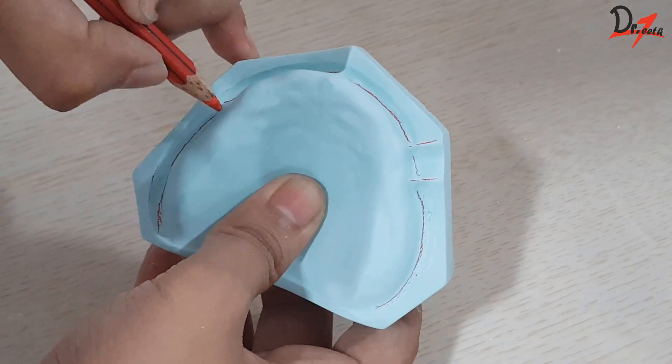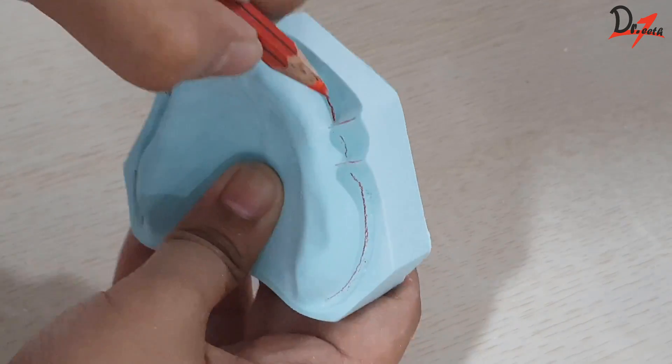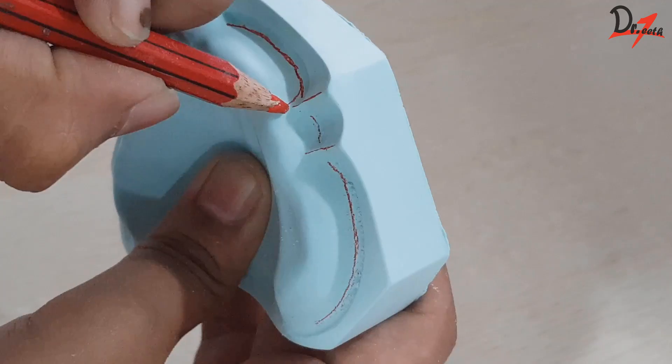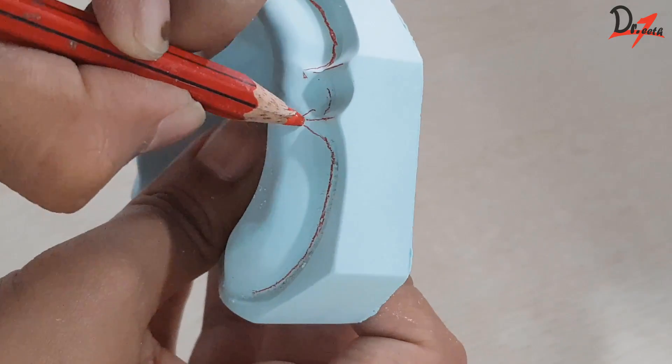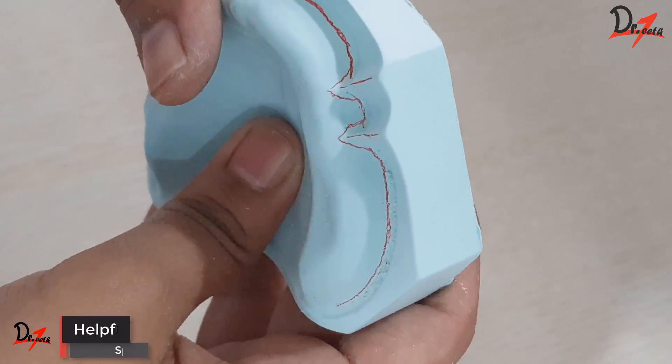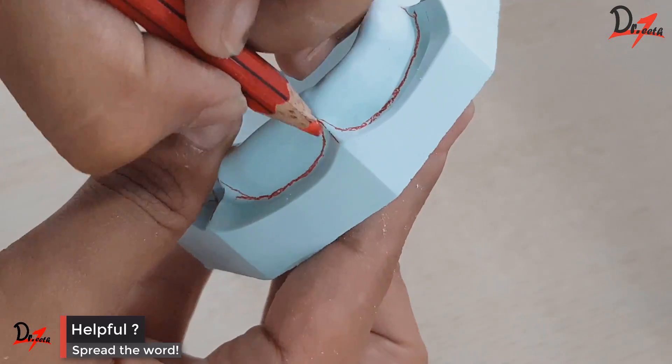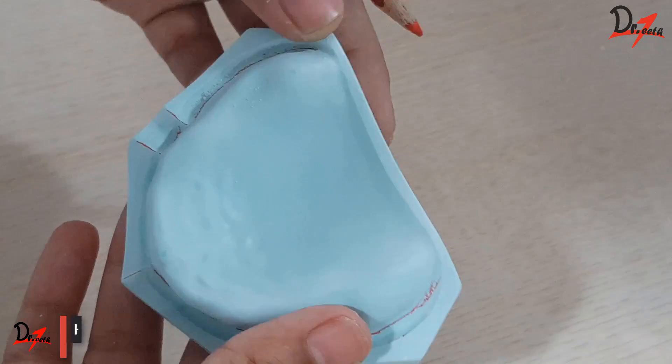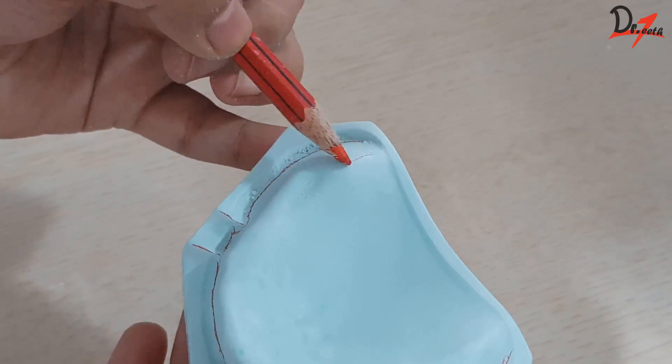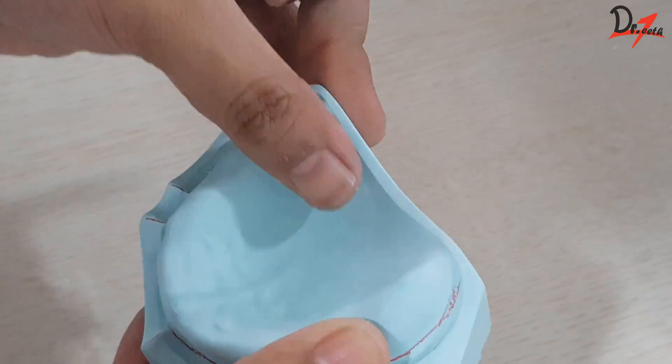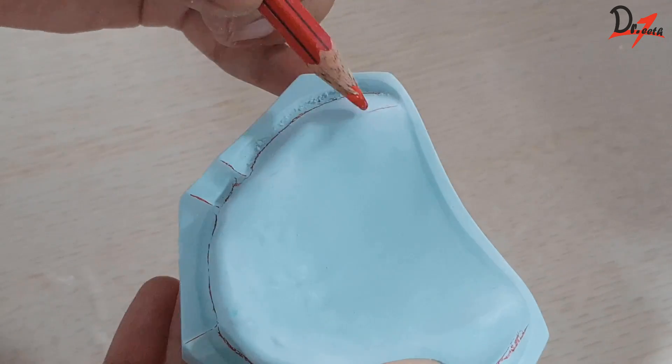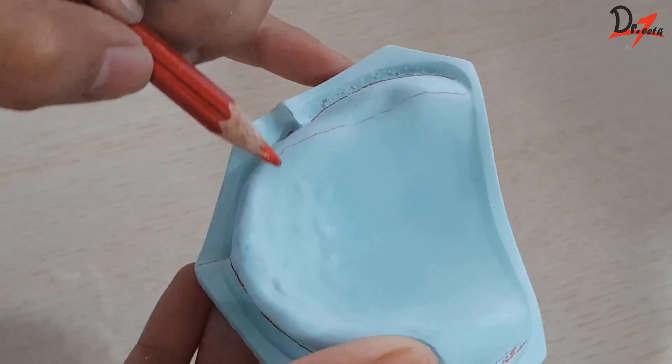And then we will mark all the freenums. And then we have to mark the crest of the ridge. This is done by placing your pencil horizontally.